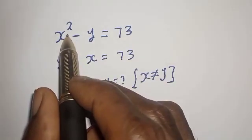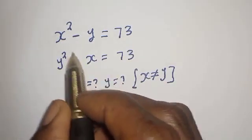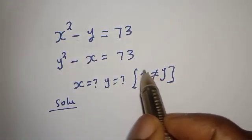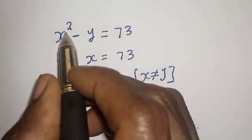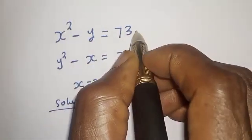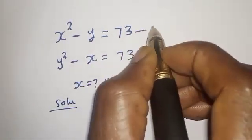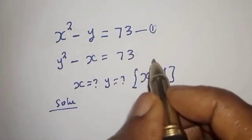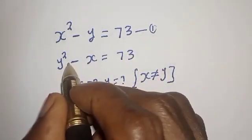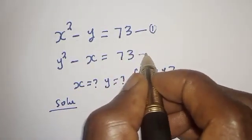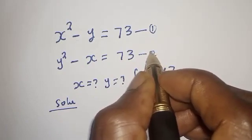We can see that there are two equations here such that x is not equal to y. Then x squared minus y is equal to 73 — let's call this equation 1. And y squared minus x is equal to 73 — let's call this equation 2.